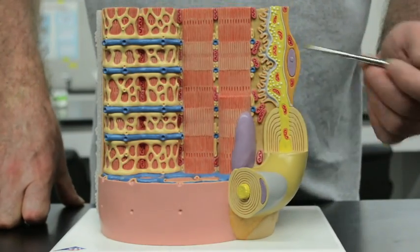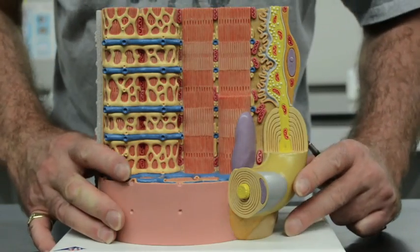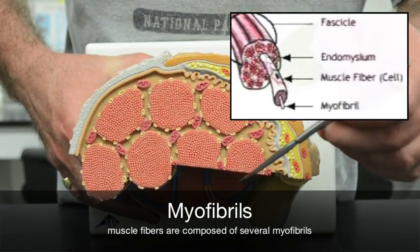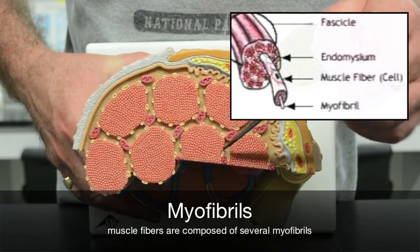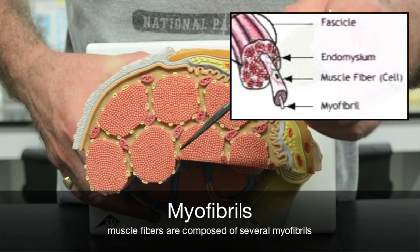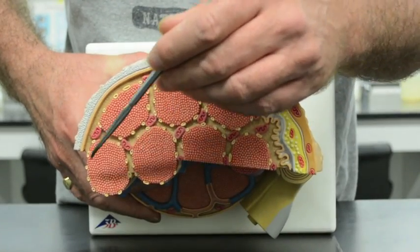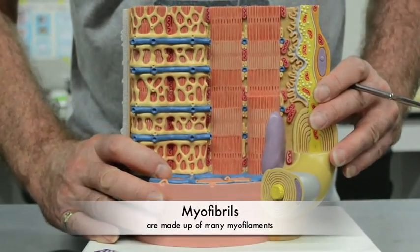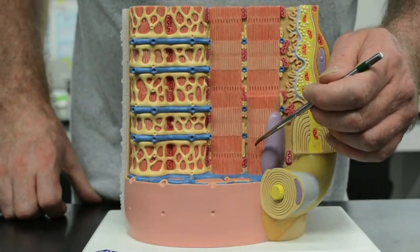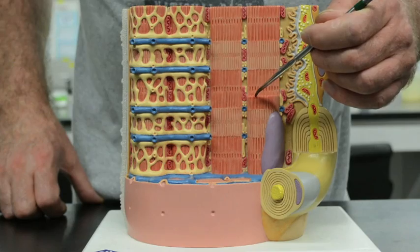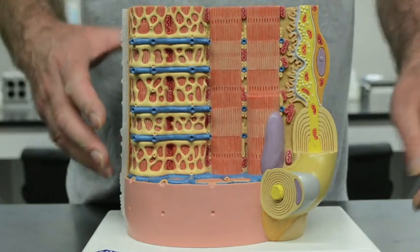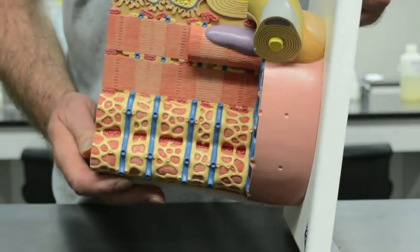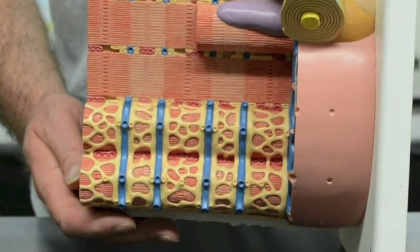The muscle fiber is made up of many myofibrils, and we can see the myofibrils here. Each myofibril is composed of many myofilaments, and we can see the individual myofilaments. And now we are going to take a closer look at an individual myofilament.